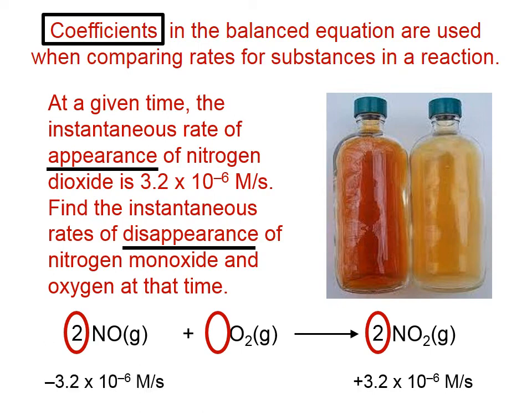If this coefficient on the right is a 2, and this one here on the left is a 2, and we know that this is appearing, getting bigger at 3.2 × 10^-6 M/s, then this is getting smaller at that same rate.